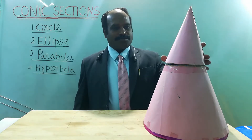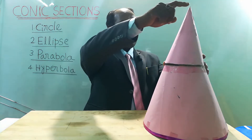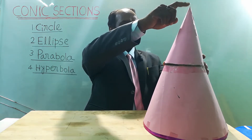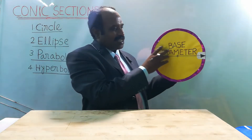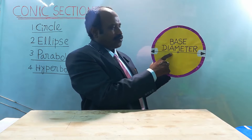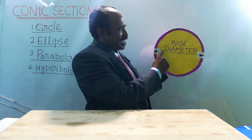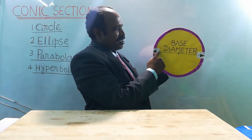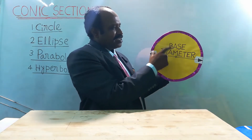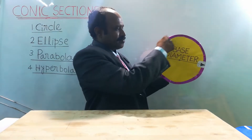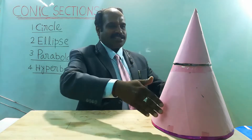Consider a cone. The various parts of the cone are: the apex — this particular point is called the apex of the cone. This yellow colored part is called the base of the cone. This is called the base center, and a line passing through the base center is called the base diameter. Half of the base diameter is called the base radius, and this is called the circumference of the base. The slant edges are called generators.